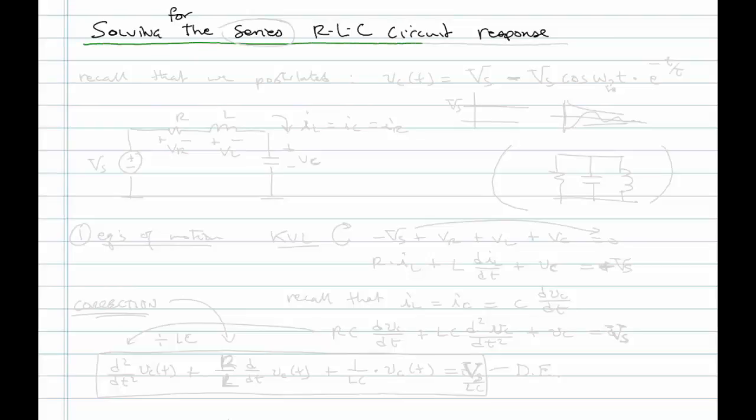Now we are ready to grind through the math necessary for solving the series RLC circuit response. Recall that we came up with a notion that the response would be of the form Vc(t) equals Vs minus Vs cosine omega t times e to the minus t over tau. So we had a constant, that's our particular solution, and then we have this exponentially decaying solution, which is our homogeneous or transient solution.